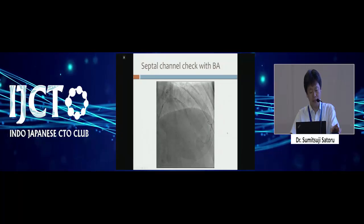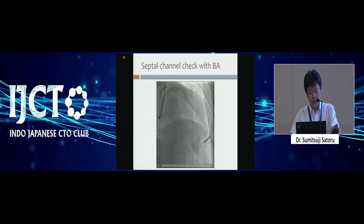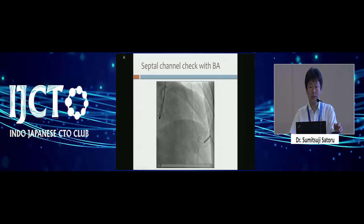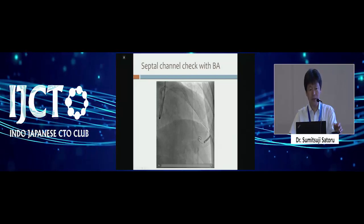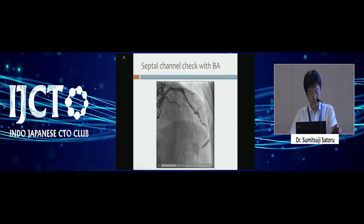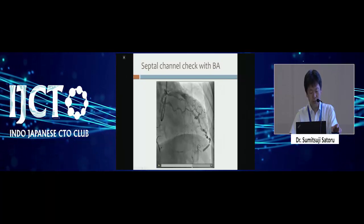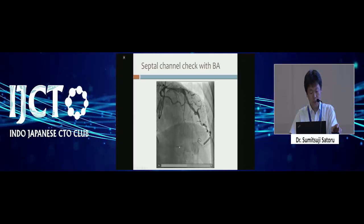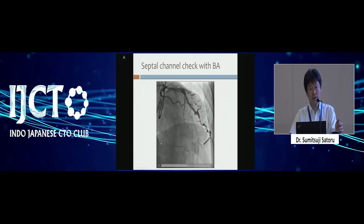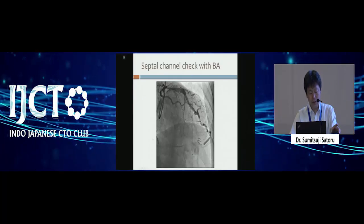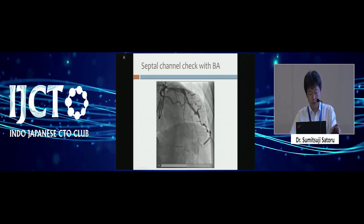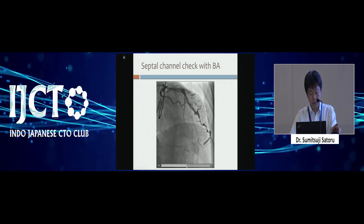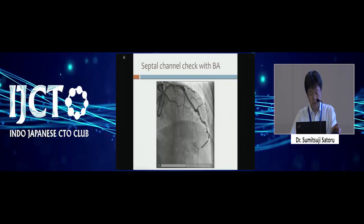So what I did was advance the wire into the distal connection and then use a balloon — of course not making a dissection, because this is the dominant collateral flow. Softly, two atmospheres, three atmospheres, four atmospheres. This channel is so big, so I chose 2.5. Then with injection, we can see some connection from here. The important point of checking the collateral is which part of the distal lumen can be seen earlier. So the right coronary can be seen earlier, and then also this segment — flow coming from the circumflex — and this flow must come from the septal channel.